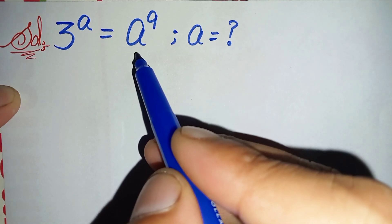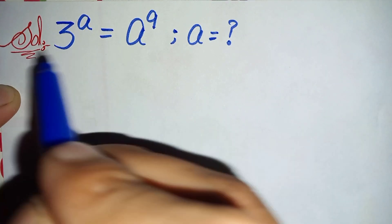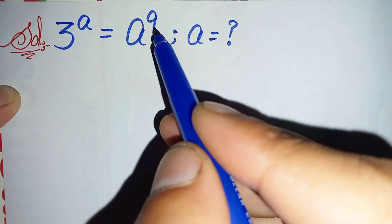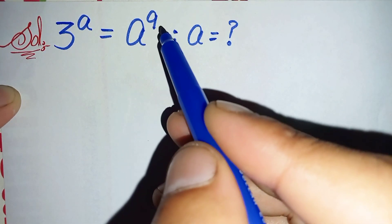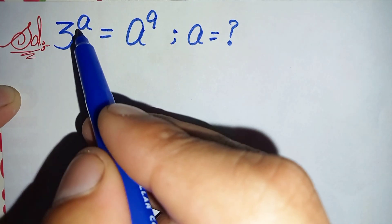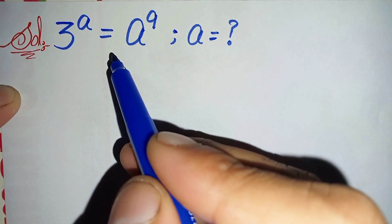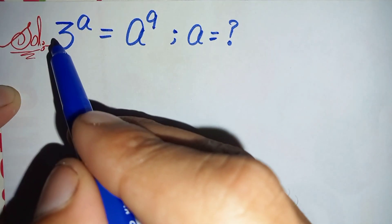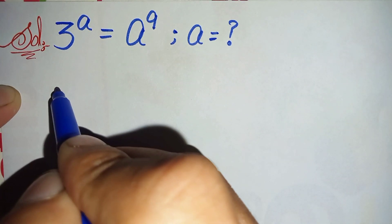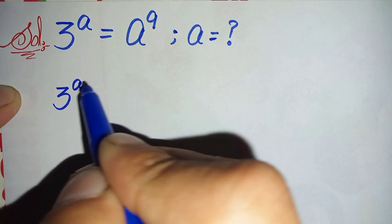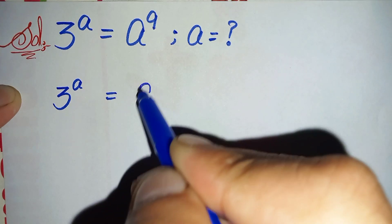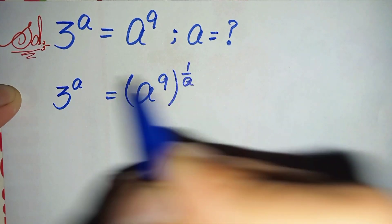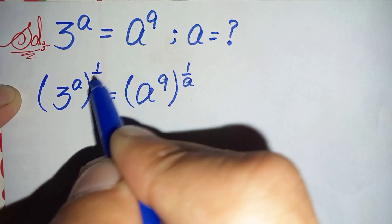Looking at both sides, on the right hand side there is a in the base, which is an unknown, and there is a constant number in the power. So in this problem we will try to make 1 over a in the power on the right hand side, and a constant number in the power on the left hand side. For that, first of all we will take 1 over a as the power on both sides to eliminate a from the left hand side.